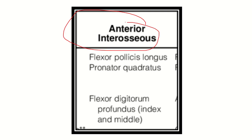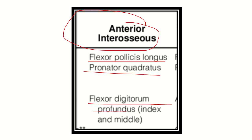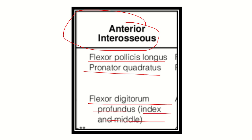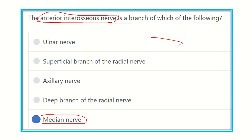The anterior interosseous nerve has no sensory supply. It supplies two and a half muscles: one is the flexor pollicis longus, second is the pronator quadratus, and the lateral half of flexor digitorum profundus — the part which attaches to the index finger and middle finger. Our answer is now ready: the anterior interosseous nerve has no sensory supply, it arises from the median nerve, and supplies two and a half muscles. Thank you all.